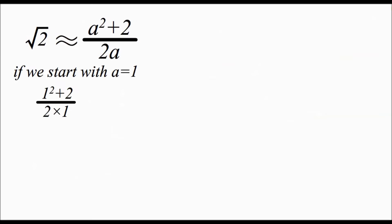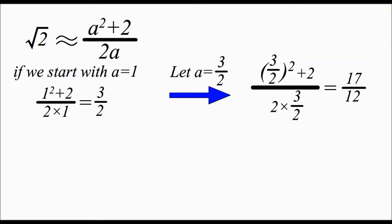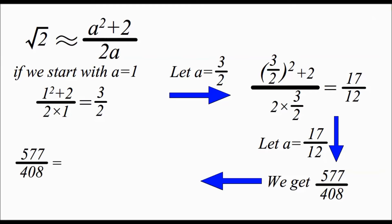If we try 1 in it, we get 3 over 2. And then if we put 3 over 2 in it, we will get 17 over 12. And then if we repeat it again, we get 577 over 408, which equals 1.41421568 something something something. This number is accurate for 5 decimal places.